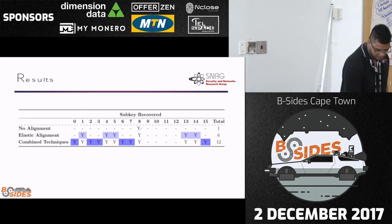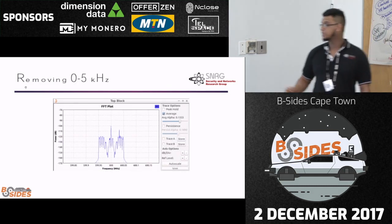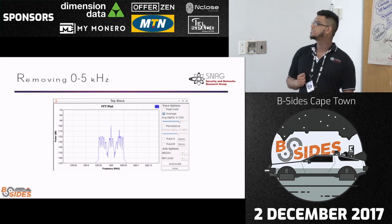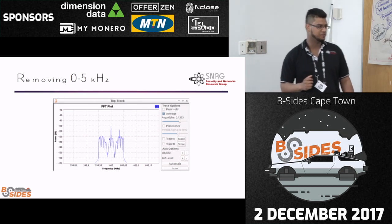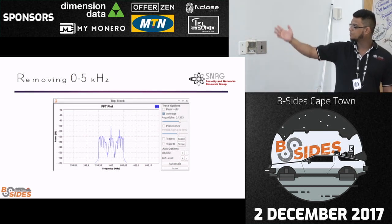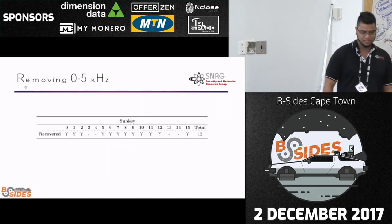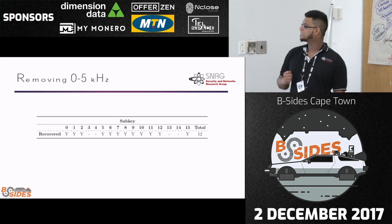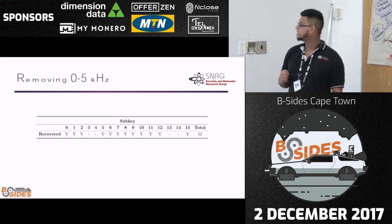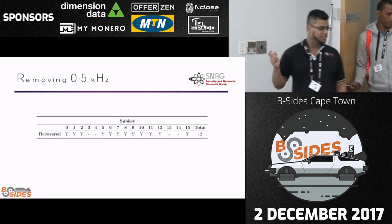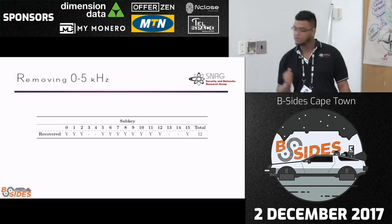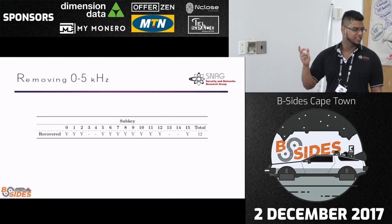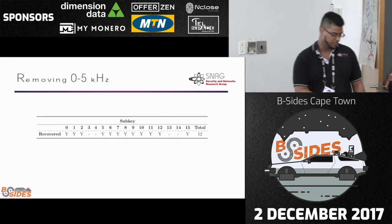We then applied our new technique — looking at removing frequencies. We removed frequencies between 0 to 5 kHz within the captured signal. Interestingly, we recovered 12 of the 16 sub-keys as well. However, on this occasion it was 12 different sub-keys. Just by removing the 0 to 5 kHz range, we were getting different sub-keys than before.